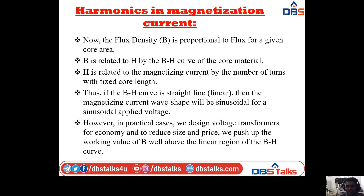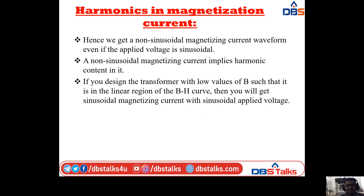However, in practical cases, we design voltage transformers for economy and to reduce size and cost, and we push the working value of B above the linear region of the BH curve. Hence we get a non-sinusoidal magnetizing current waveform even if the applied voltage is sinusoidal. A non-sinusoidal magnetizing current implies harmonic content in it.